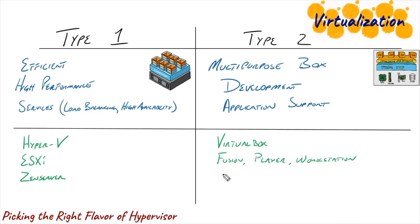Another one to be aware of is GNS3, which is designed to provide virtualization of Cisco routers — a way to virtualize a network infrastructure for testing, development, and learning. Type two hypervisors are going to be an aid to learning because you can simply download one of these pieces of software and load in operating systems to test them out. Type one hypervisors are more permanent installations that we see in enterprise environments hosting fleets of servers and desktops for the benefit of everyone who works there.